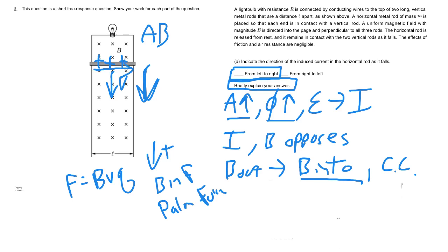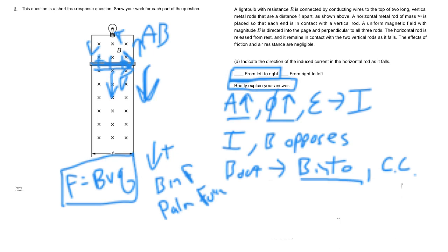From left to right, and so that means all these charges are going to be pushed in this direction and this will just complete the circuit as they start to move around. And so that's an alternate way of doing it using this F equals BVQ idea to figure that part out.